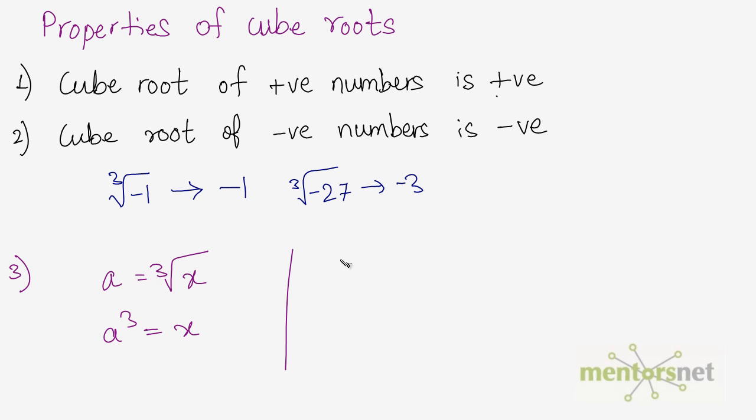So if you have cube root of 27 is equal to 3, you can take the cube on both sides of the equal to, so you have 27 is equal to 3 cubed, and of course 27 is equal to 27. So this is how you solve cube roots.